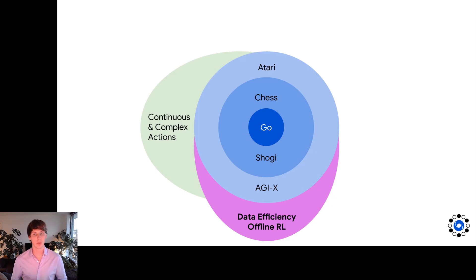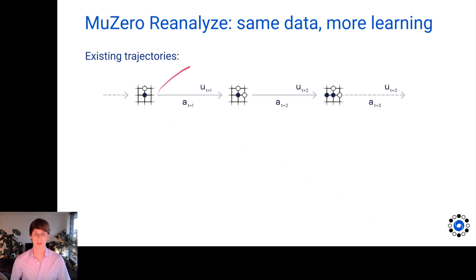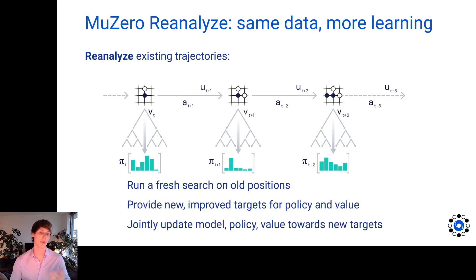Today, however, we're going to focus on a different extension: data efficiency and offline RL. For this, we use a reanalyze algorithm. Given some trajectories we generated previously or have from some other source, we want to use our model-based improvement operator — for example, our search — to compute new training targets. That's why we call it reanalyze: we compute new targets, and then use those targets to jointly update our model, our value, and our policy predictors.